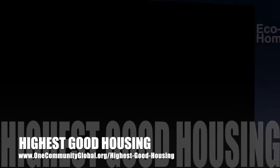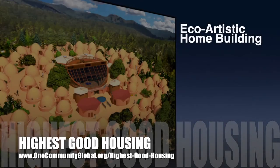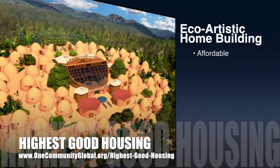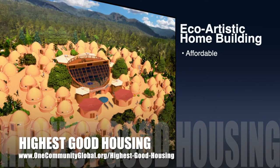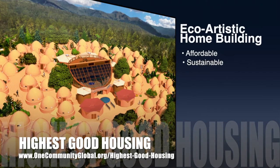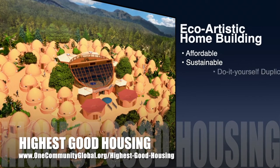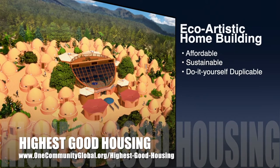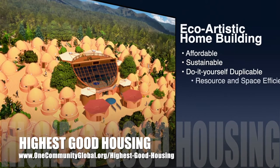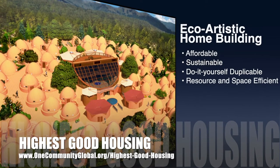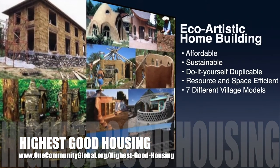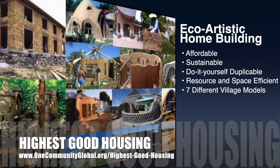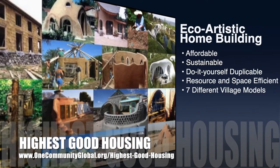The One Community approach to highest good housing is eco-artistic home building that is affordable, sustainable, do-it-yourself duplicable, resource and space efficient, and consists of seven different sustainably constructed village models.